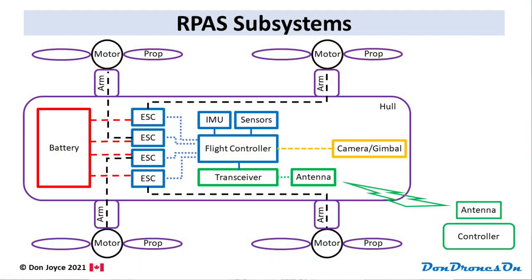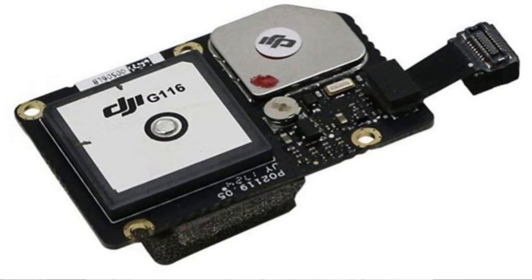By the way, on my diagram, I'm showing each item as a separate box, but these functions are often combined into a single module. The GPS and compass, for example, are often in the same module. Speaking of GPS, let's start by talking about that.